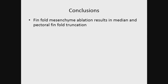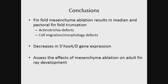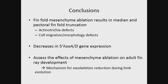Briefly, following fin-fold mesenchymal ablation we see truncation in the median and pectoral fin. We see actinotrichia defects as well as defects in cell migration and cell morphology. We've also looked at changes in gene expression of the 5' HoxAD genes and seen reduction in both the median and pectoral fin following ablation. The ultimate goal of this project is to assess the effects of fin-fold mesenchymal ablation on adult fin development—to assess whether fin-fold mesenchymal defects are a plausible mechanism for exoskeleton reduction during limb evolution.